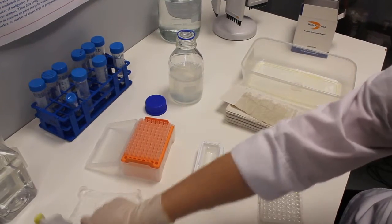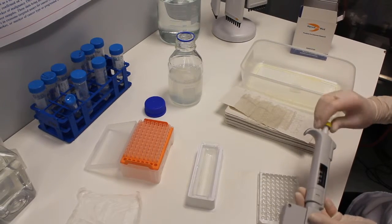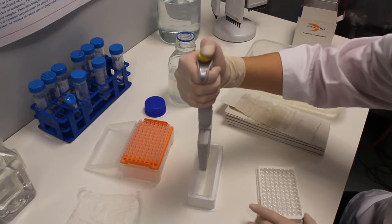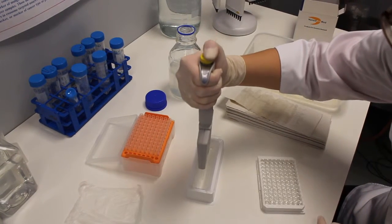Then add 300 microliters of washing buffer per well and discard the plate contents. Repeat this procedure twice again.